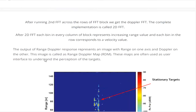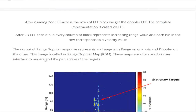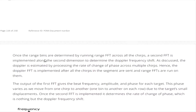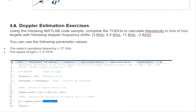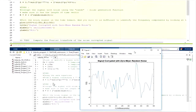The most important things to understand in this section are: the Doppler effect, how the radar measures the velocity of a target using Doppler, and how we calculate velocity if we know the change in frequency — which is the change of phase — between the two different signals.